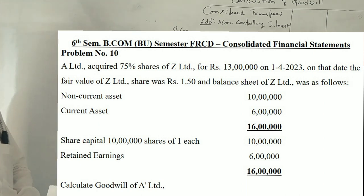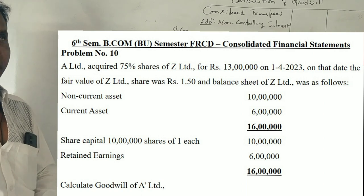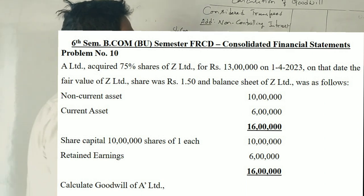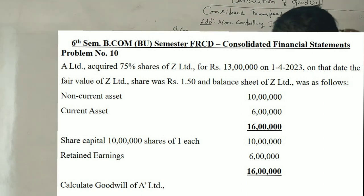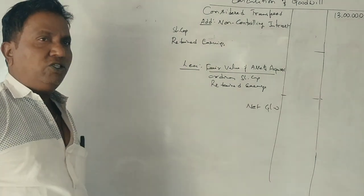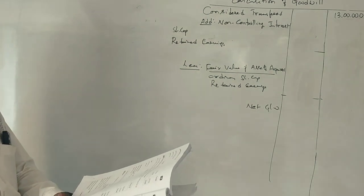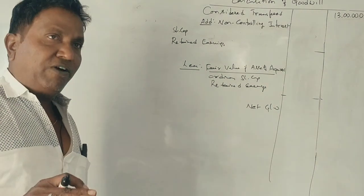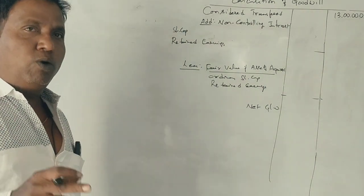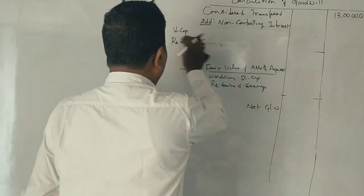Now, the price of 75 percent shares is Rs. 13 lakhs. The consideration transferred, total amount is Rs. 13 lakhs.